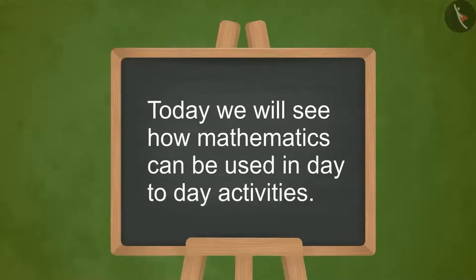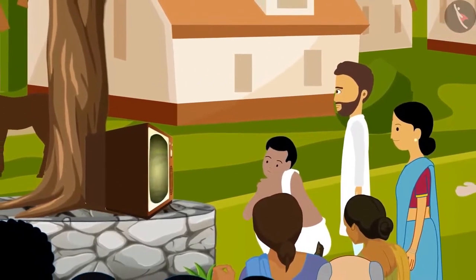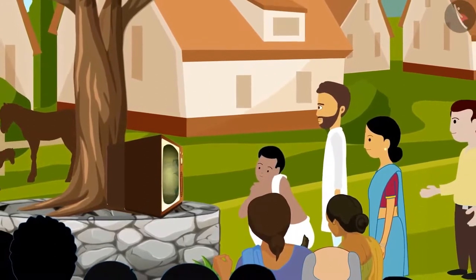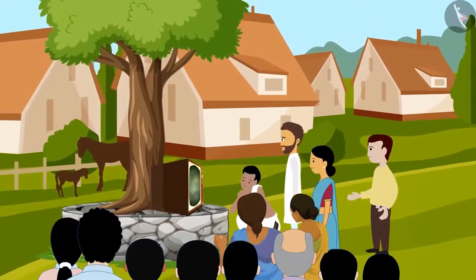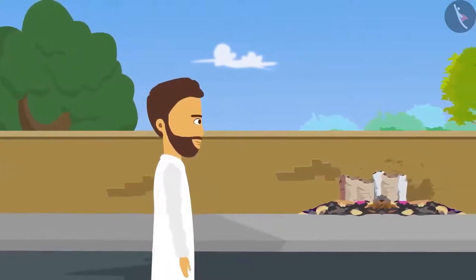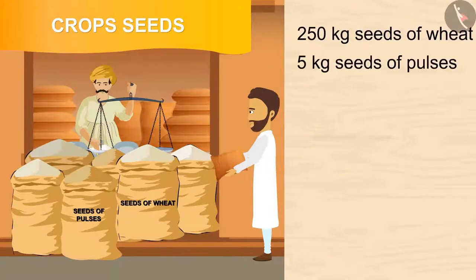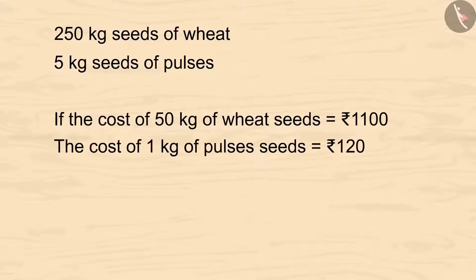How mathematics can be used in day-to-day activities. This is Garim Bhai. Last year, the yield of his crops was not so good. He watched in the Krishidarshan program on Panchayat Khars TV that the fertile capacity of land reduces due to years of farming. He also learned that if he grows pulses along with wheat, the soil will become fertile again. Today, Garim Bhai is going to buy some seeds of wheat and pulses. He bought 250 kg of wheat seeds and 5 kg of pulse seeds. The cost of 50 kg of wheat seeds is Rs. 1100 and the cost of 1 kg of pulse seeds is Rs. 120.